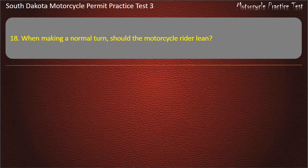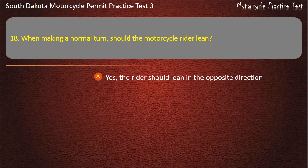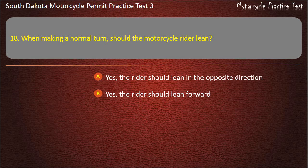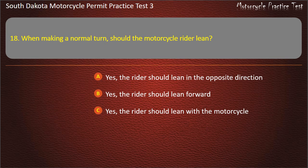Question 18: When making a normal turn, should the motorcycle rider lean? Yes, the rider should lean in the opposite direction; Yes, the rider should lean forward; Yes, the rider should lean with the motorcycle; No, the rider should not lean. Answer: Yes, the rider should lean with the motorcycle.